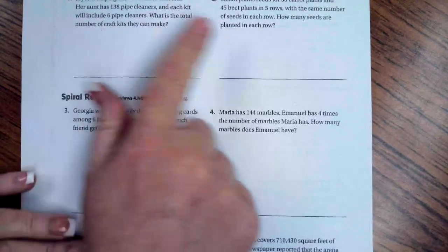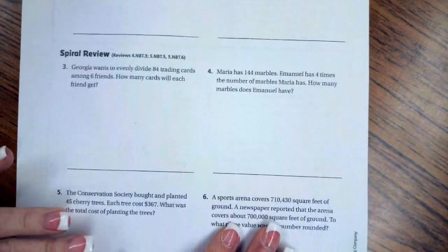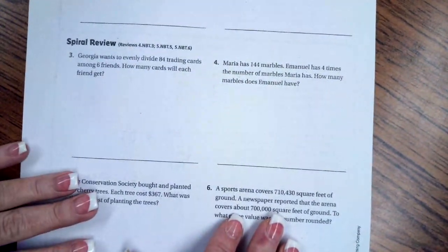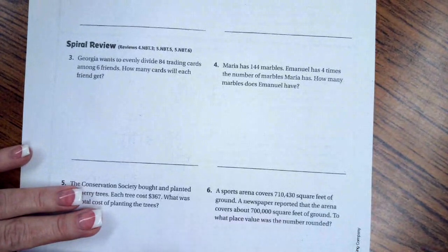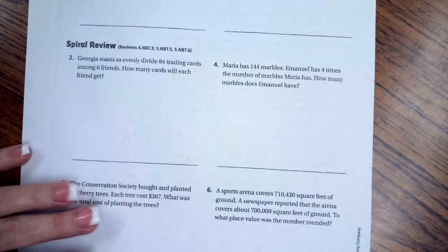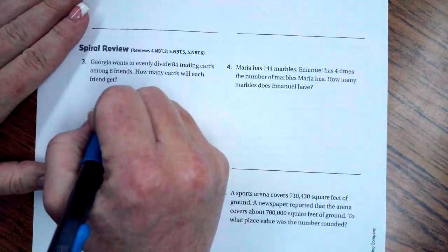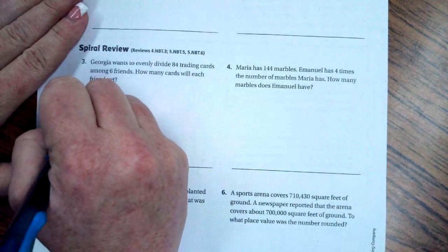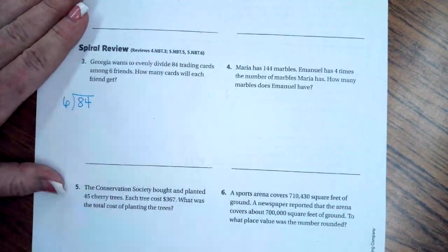So you guys do number four and number five. We're going to go over onto the back. You guys are going to do the lesson check, just like always. Spiral Review says Georgia wants to evenly divide 84 trading cards among six friends. How many cards will each friend get?